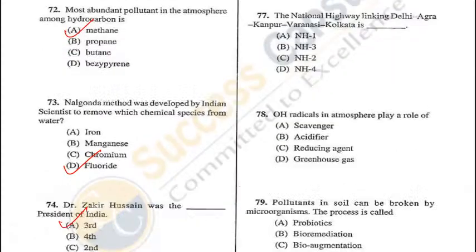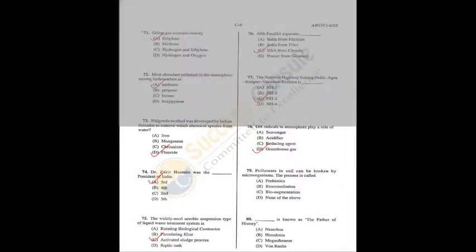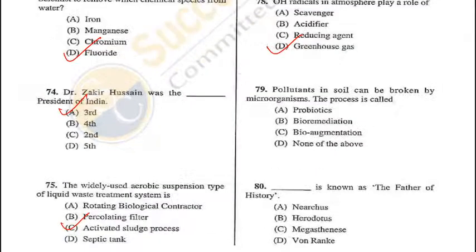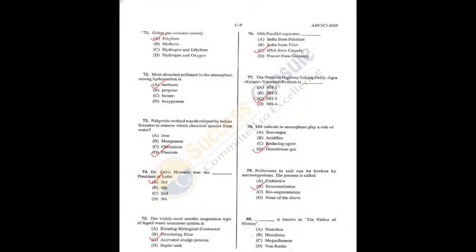Question 78: OH radicals in the atmosphere play the role of a greenhouse gas. They regulate ozone levels in the ozone layer and lead to severe ozone depletion in polar regions each spring — D is the answer. Question 79: Pollutants in soil can be broken down by microorganisms — this process is called bioremediation — B is the correct answer. Question 80: Who is known as the father of history? Herodotus — B is the answer. Q79 = B, Q80 = B.